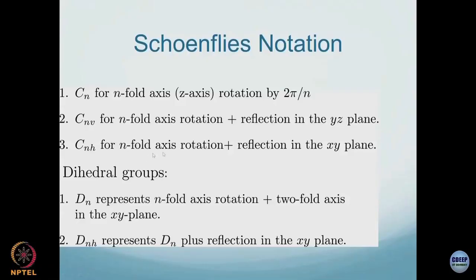Those are the shorthand notations and each one is a point group. C_n is a point group; C_nv has C_n as a subgroup, and C_nh also has C_n as a subgroup.